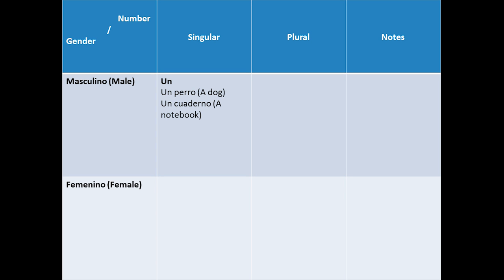For male words in singular form we have un. For example, un perro, un cuaderno.